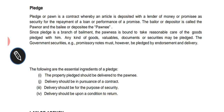Now let us discuss the rights of the pawnee. There are three rights of the pawnee: first, the right to retain the goods until payment of the debt or expenses; second, the right to recover extraordinary expenses incurred by the pawnee, as provided under Section 175; and third, the right to sue to recover the debt and the right to sell the pledged goods.